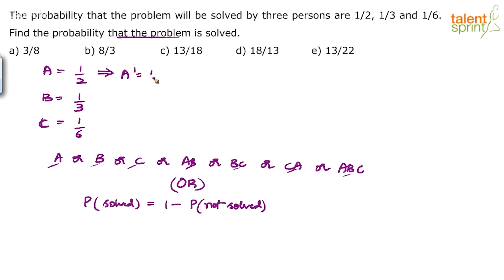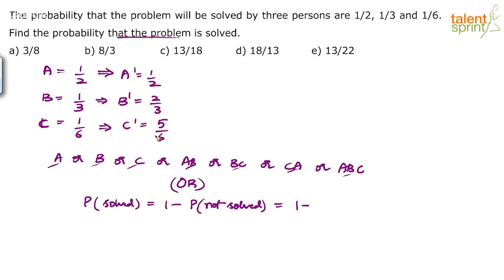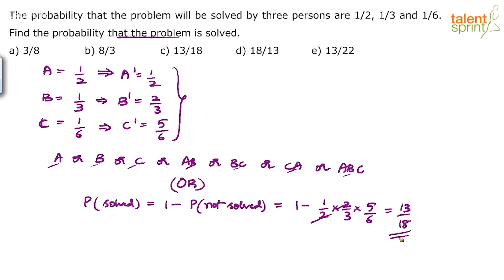If A's probability of solving is 1/2, his probability of failing is 1/2. If probability of B solving is 1/3, then probability of B not solving is 2/3. Probability of C solving is 1/6, so probability of C not solving is 5/6. Total probability is always 1, so it's 1 minus (1/2 × 2/3 × 5/6). Simplify: 2 and 2 cancel, giving 5/18. So 1 minus 5/18 is 13/18. That's your answer — 13/18, option C.